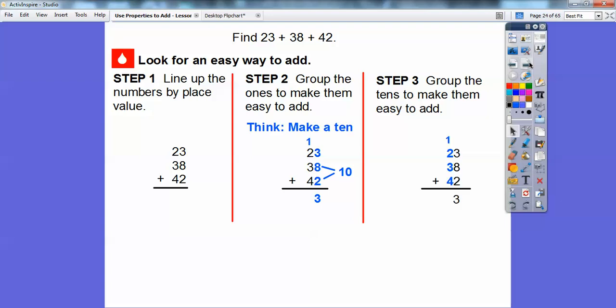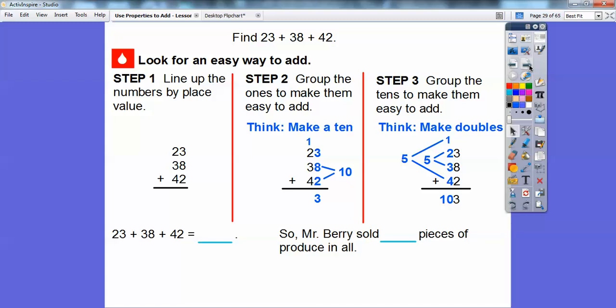We can group the tens to make them easy to add using doubles. There's doubles happening. 3 plus 2 is 5, and 4 plus 1 is also 5. And 5 and 5 is easier to add. If we added 5 plus 5, that adds up to 10, so we carry the 10. So it's 103. 23 plus 38 plus 42 equals 103. So Mr. Berry sold 103 pieces of produce in all. That was slick. If we add these first, that gets us 10. When we add this 10 with this 3 is 13, so we carry the 3 and the 1. We're just looking for quicker ways to add, faster ways.